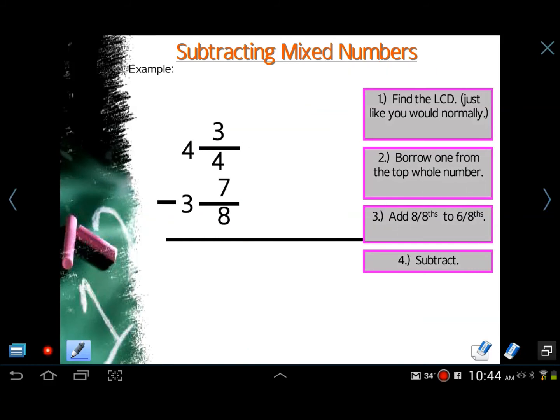Here's our next example. Like our previous example here, we need to borrow. We cannot take seven away from six. So what do we do? We borrow from the whole number. We need one. We need something more. So that becomes three. And then what do we add to six-eighths? We want to do eight-eight because that was our LCD. So we're going to add eight-eighths. So what is six plus eight? That is fourteen. So now, instead of six minus seven, we have fourteen minus seven. And it's all set now to subtract.